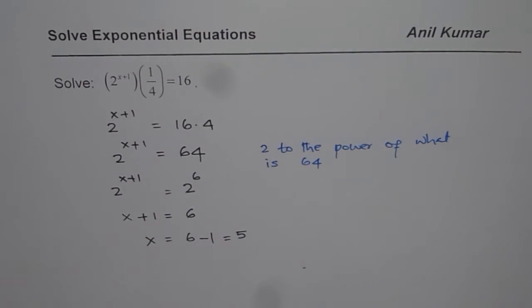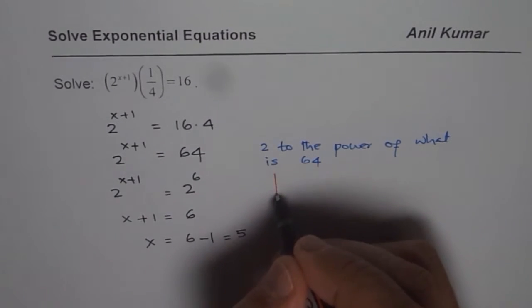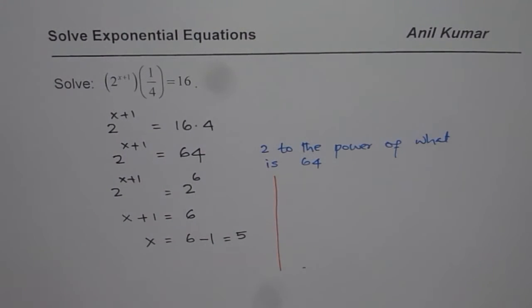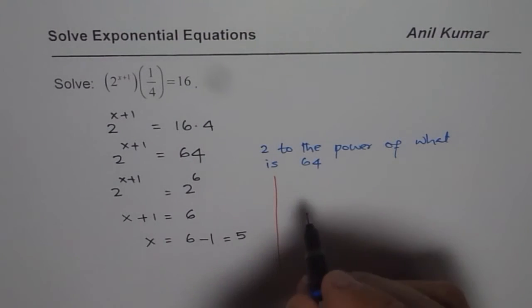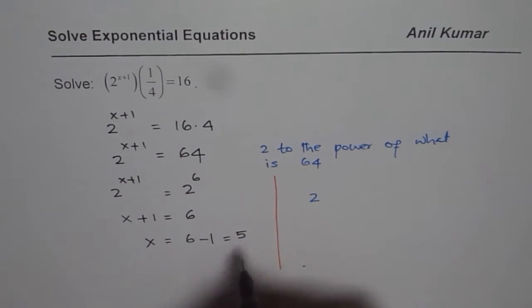Now as a part of the check, you can quickly check your answer also. So let us check it out. We have 2 to the power of x is 5. So 5 plus 1 times 1 over 4.